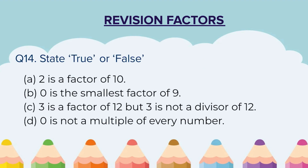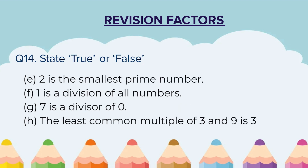Question 14: State true or false. A) 2 is a factor of 10. B) 0 is the smallest factor of 9. C) 3 is a factor of 12 but 3 is not a divisor of 12. D) 0 is not a multiple of every number. E) 2 is the smallest prime number. F) 1 is a divisor of all numbers. G) 7 is a divisor of 0. H) The least common multiple (LCM) of 3 and 9 is 3.